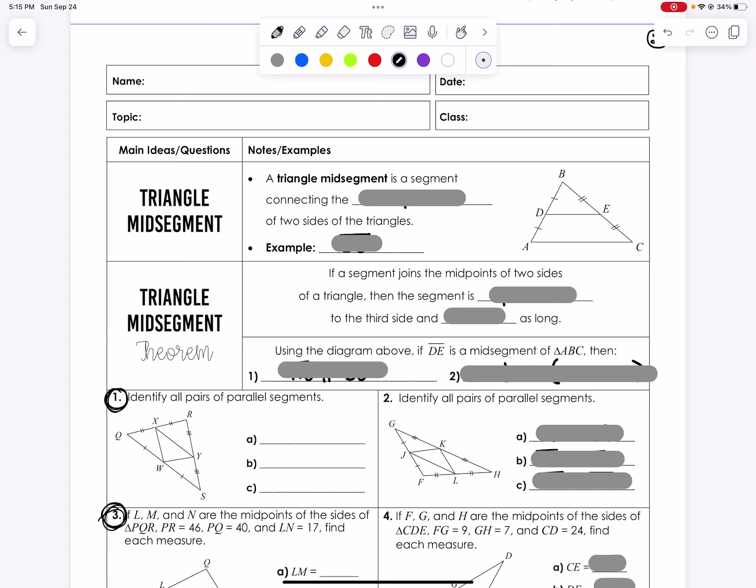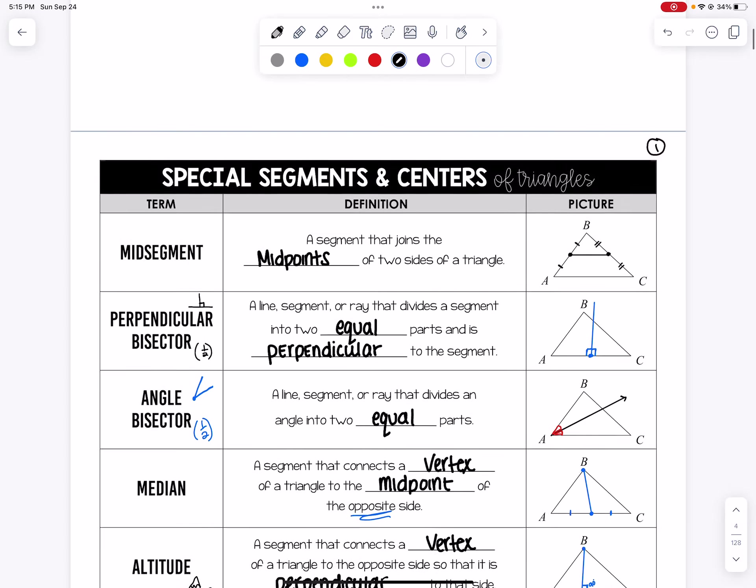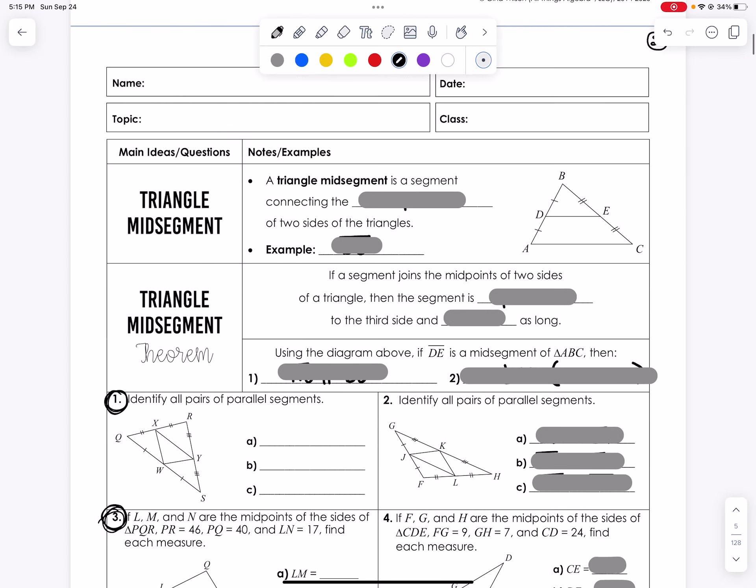Okay, hi everyone. We are going to now start our first lesson in this unit, which is finding relationships in triangles. Our previous video was about the terms that we're going to see a lot this unit. And so today we're going to focus on triangle midsegment and triangle midsegment theorem.